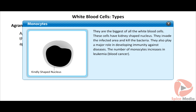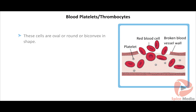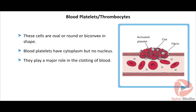The number of monocytes increases in leukemia. Blood platelets, otherwise called thrombocytes, are oval, round or biconvex in shape. These cells have cytoplasm but no nucleus. They play a major role in the clotting of blood.